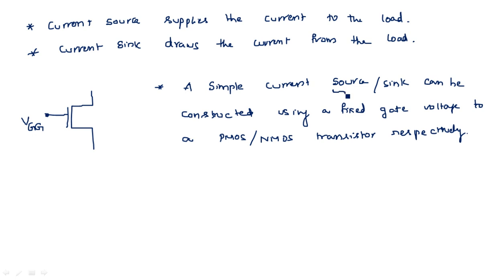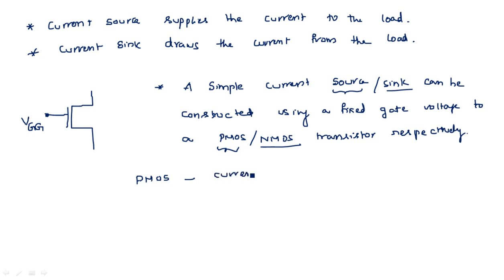Respectively means: the current source can be constructed using a PMOS device, and the current sink can be constructed using an NMOS device. So PMOS is acting as a current sourcing transistor and NMOS is acting as a current sinking transistor.